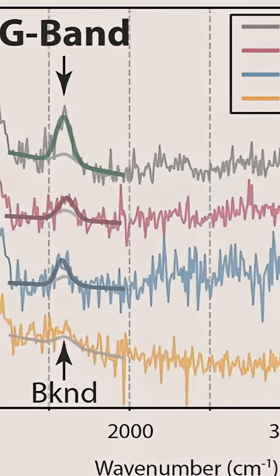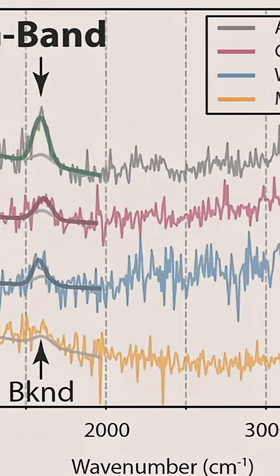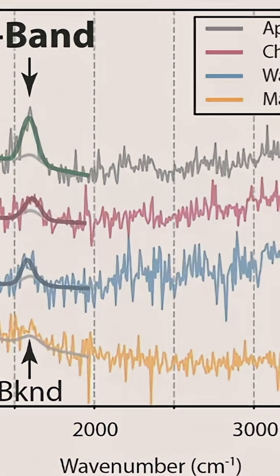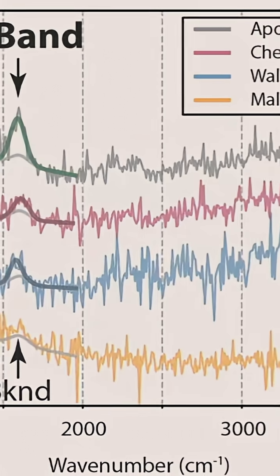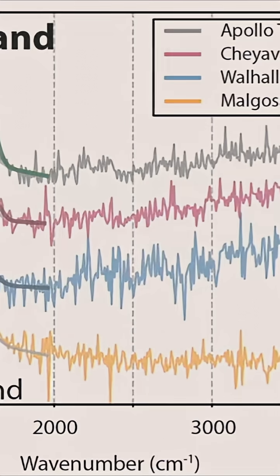We see that G-band in the Cheyava Falls target, and we actually see it in a couple of the other locations that we interrogated around the Bright Angel formation. And this tells us that we had a rusty red mud that was deposited in the presence of organic matter.